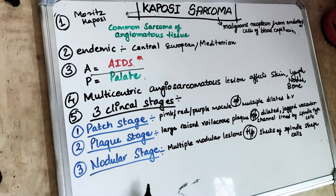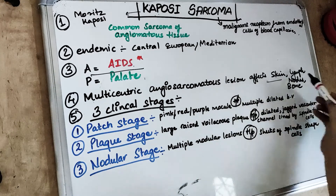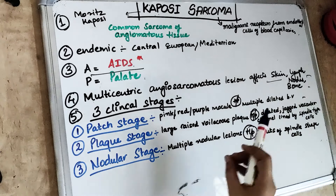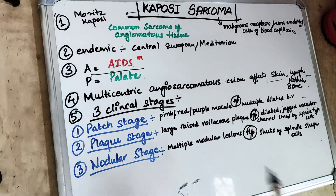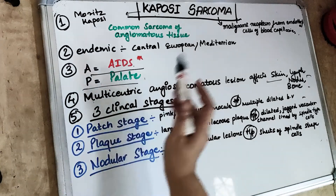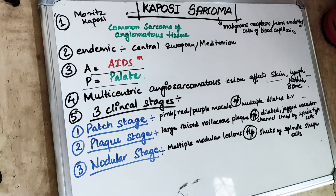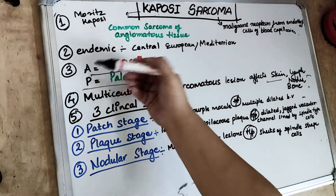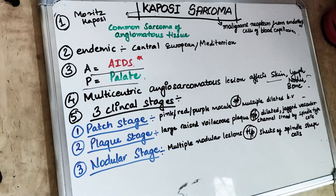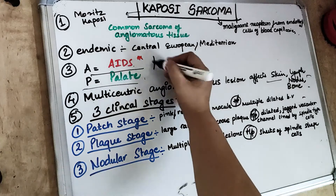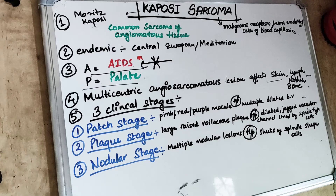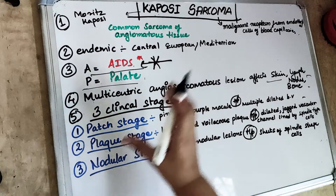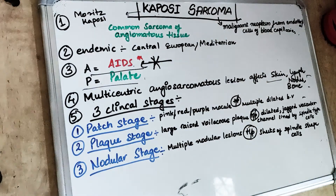Usually Kaposi Sarcoma is not seen in the oral cavity. Mostly it affects either the skin, the lymph nodes, or the bone. Only 10% of Kaposi Sarcoma cases have oral lesions, and in the oral cavity it mostly affects the palatal region. That is why: A for AIDS, P for palate. Always remember that Kaposi Sarcoma is associated with AIDS, and most AIDS patients actually have Kaposi Sarcoma.